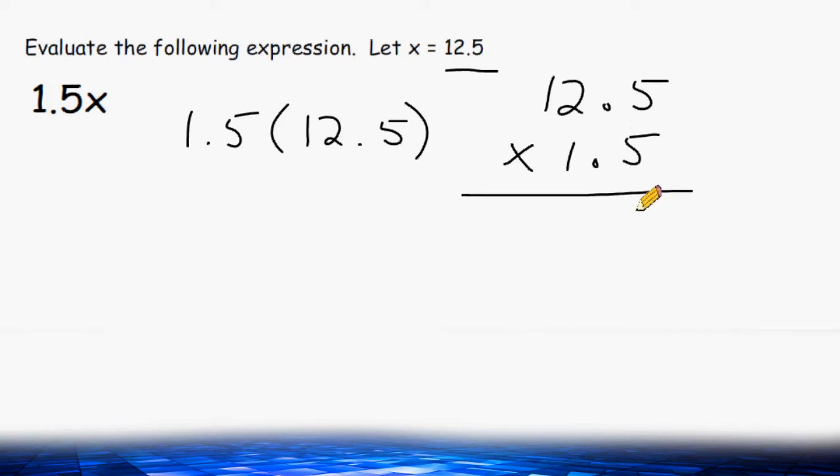5 times 5 is 25 and we carry the 2. 5 times 2 is equal to 10 plus 2 more is 12 and then we carry the 1. And 5 times 1 is 5 plus that 1 we carry is 6.